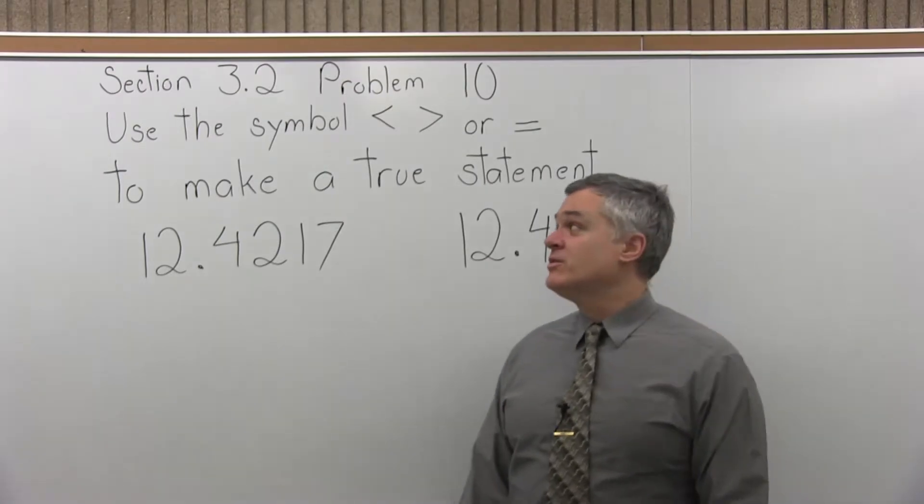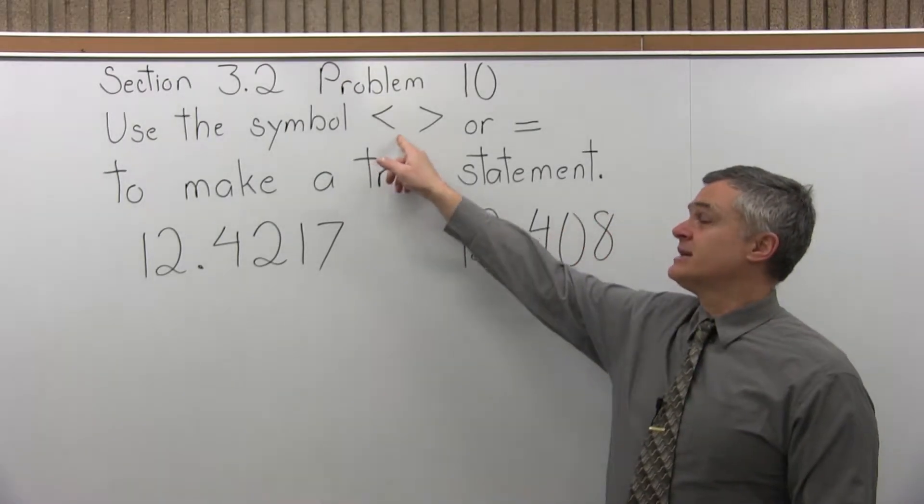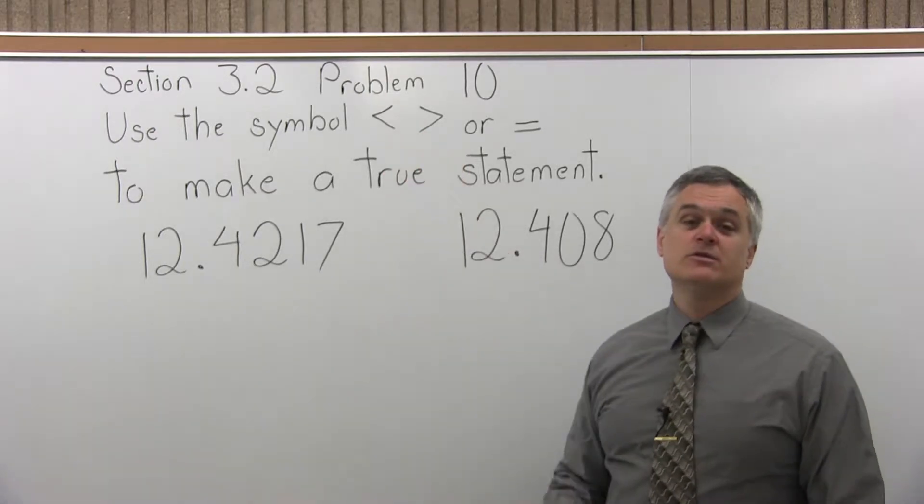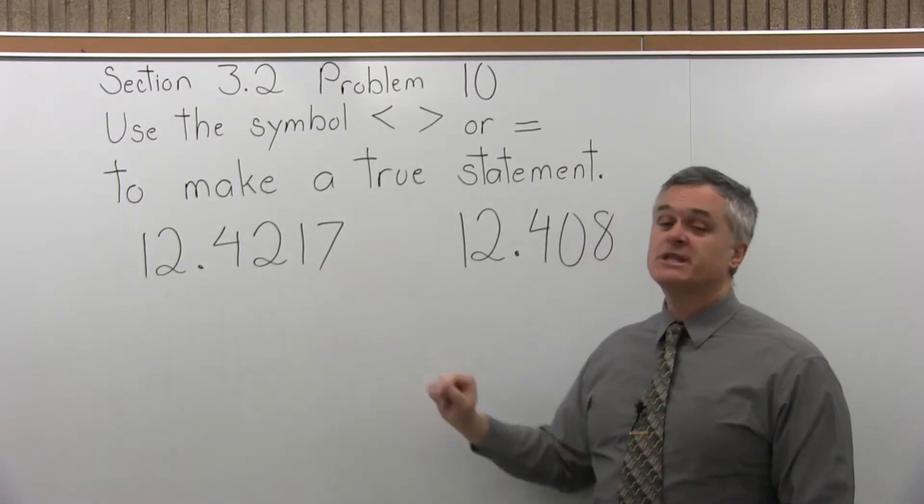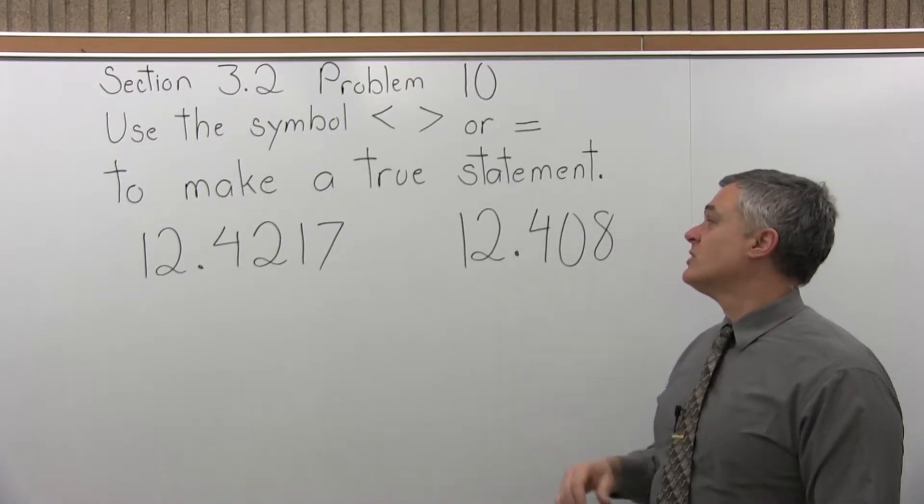This is Section 3.2, Problem 10. It says, use the symbol less than, greater than, or equal to, to make a true statement. We're comparing two numbers. One is 12.4217, and the other is 12.408.